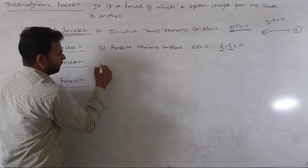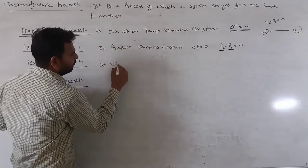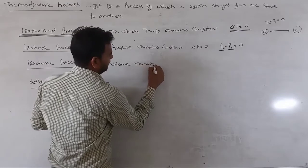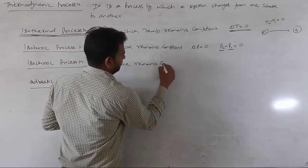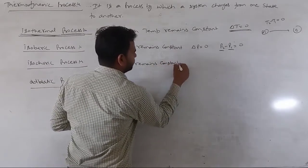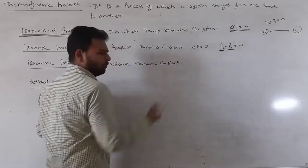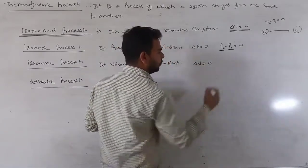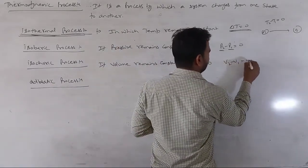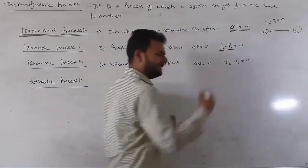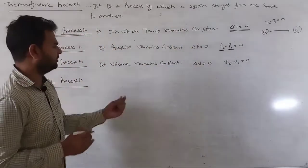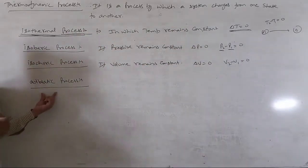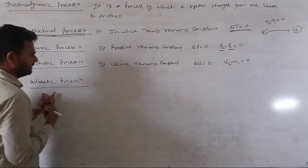The next process is the isochoric process, in which volume remains constant. The change in volume ΔV equals zero, meaning V₂ minus V₁ equals zero — the final volume equals the initial volume.